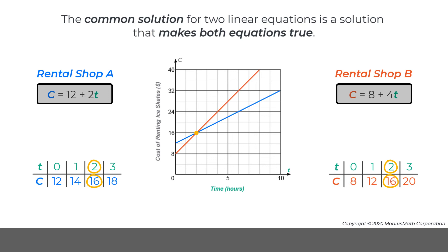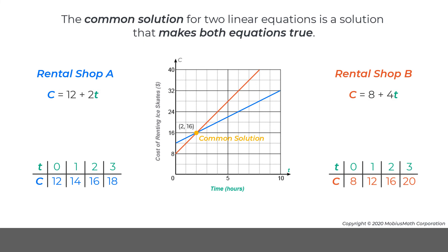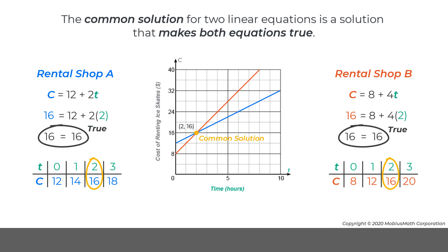So at both shops, it costs $16 to rent skates for two hours. This is the common solution for the two skate rental equations. Notice that the ordered pair makes both equations true — this is the common solution for the two linear equations.